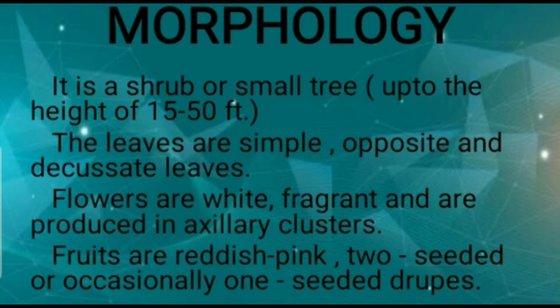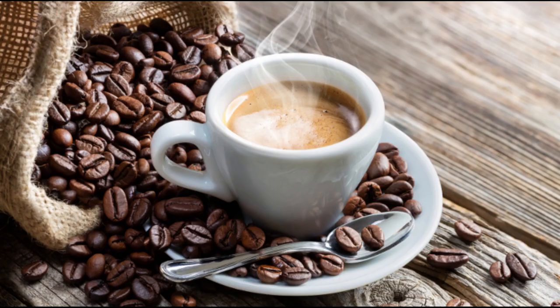The leaves are simple, opposite, and decussate. Flowers are white, fragrant, and are produced in axillary clusters. Fruits are reddish-pink, two-seeded or occasionally one-seeded drupes.